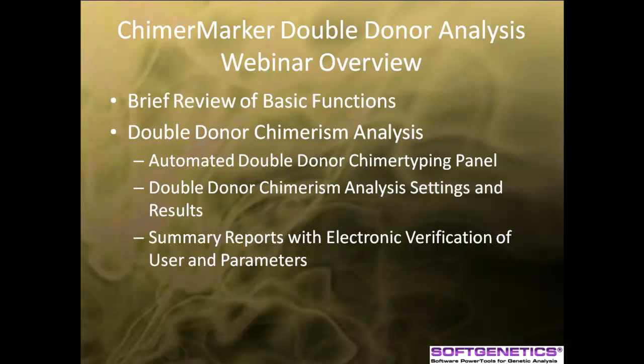First, we will do a quick overview of the basic functions covered in the introductory webinar. For more in-depth information, please review the introductory webinar, which discusses genotyping analysis, analysis settings, reviewing data, and single donor chimerism analysis. Then, we will move on to double donor chimerism analysis using the rapid chimer typing method. Finally, we will discuss the calculated results, saving the report, and printing the report.